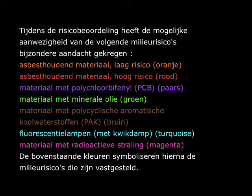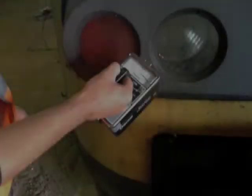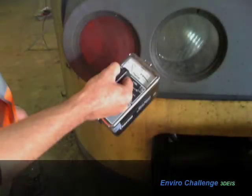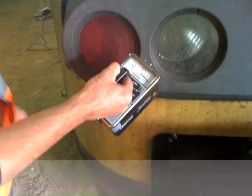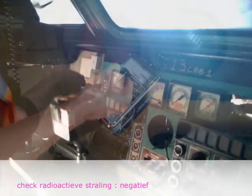Colors symbolize the identified environmental risk. Check radioactive radiation — negative.